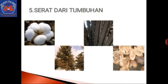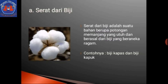Serat dari tumbuhan. Kira-kira yang kalian lihat dari gambar-gambar di powerpoint ini ada tumbuhan apa saja? Ada biji kapas, ada bambu, ada sabut kelapa, dan lain-lain. Serat dari biji adalah suatu bahan berupa potongan memanjang yang utuh dan berasal dari biji yang beraneka ragam. Contohnya biji kapas dan biji kapuk.